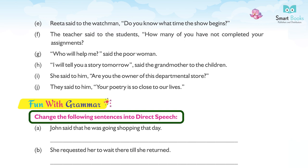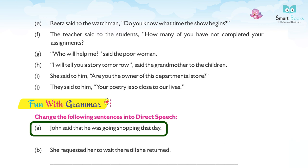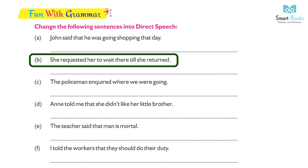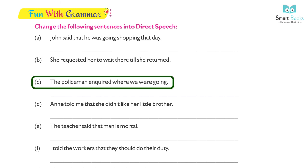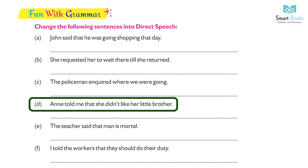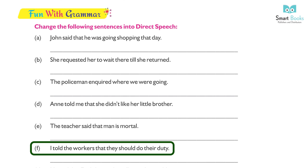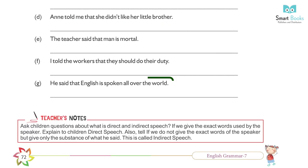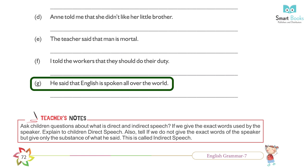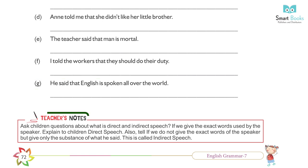Fun with grammar — Change the following into direct speech: (a) John said that he was going shopping that day. → John said, 'I am going shopping today.' (b) She requested her to wait there till she returned. → She told her, 'Please wait here till I return.' (c) The policeman inquired where we were going. → The policeman inquired, 'Where are you going?' (d) Annie told me that she didn't like her little brother. → Annie said to me, 'I don't like my little brother.' (e) The teacher said that man is mortal. → The teacher said, 'Man is mortal.' (f) I told the workers that they should do their duty. → I said to the workers, 'You should do your duty.' (g) He said that English is spoken all over the world. → He said, 'English is spoken all over the world.'